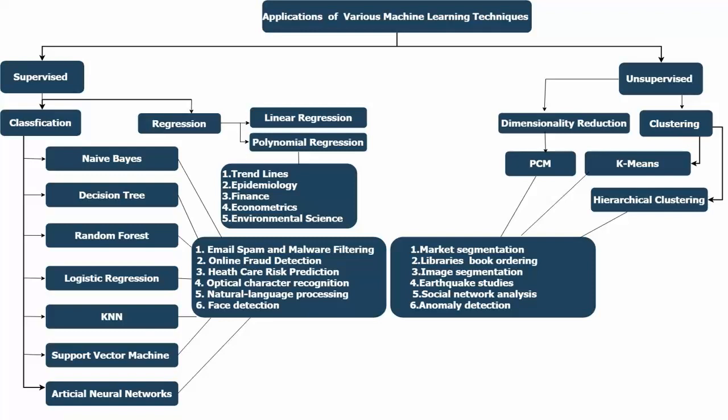For regression, we also have linear and polynomial regression. Some applications for classification algorithms include email spam filtering, detecting online fraud, healthcare risk predictions, and optical character recognition.